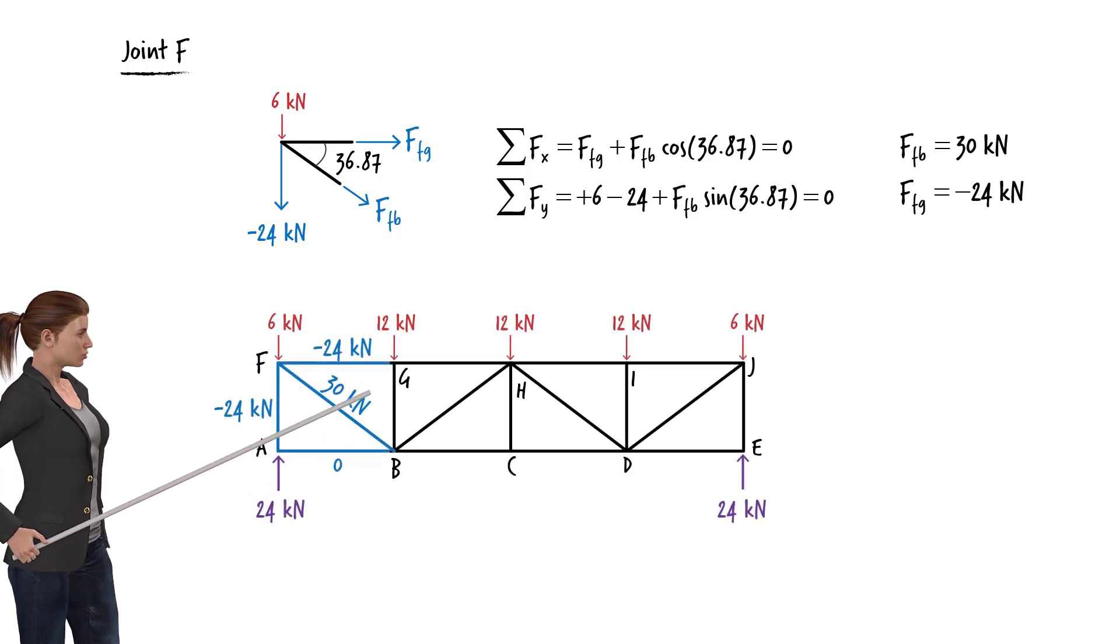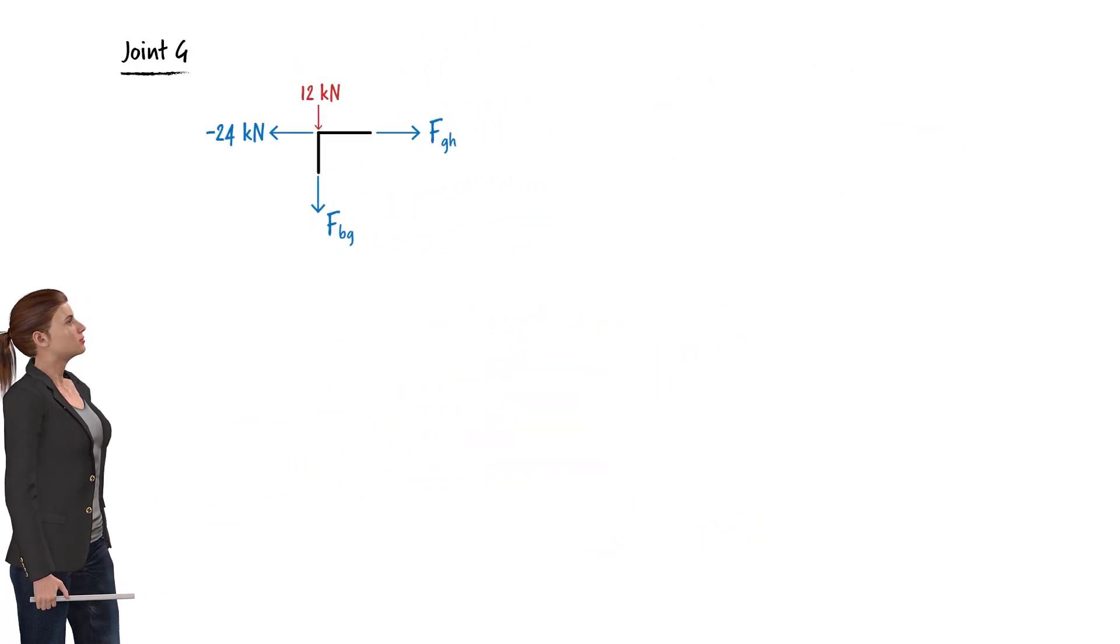Next, we can examine joint G. Here is its free body diagram. The equilibrium equations for the joint are written. Hence, the unknown forces come out to the values shown.